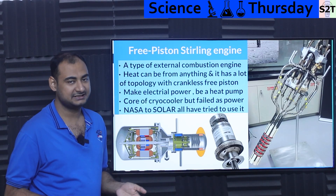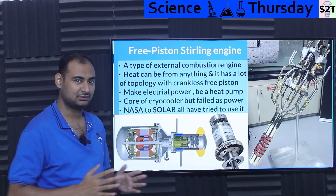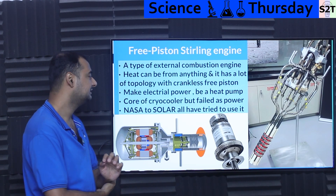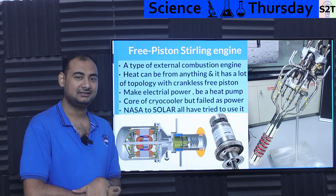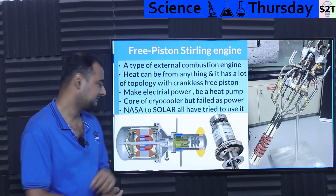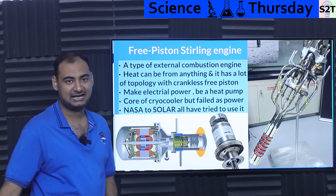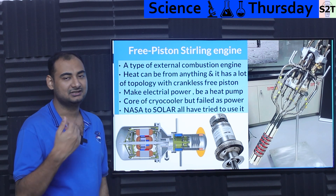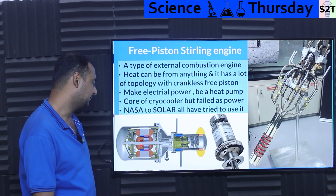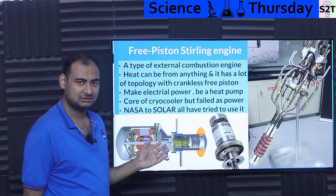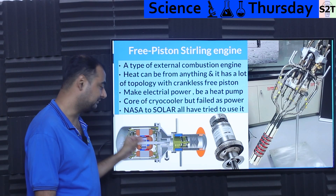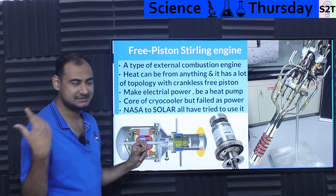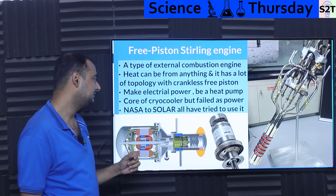There are many crank-based Stirling designs — Philips makes some excellent ones. But somebody asked: what if we throw away the crank and put springs there? The oscillating action still happens, but instead of a crank you have a spring. And if you put magnets in the center and coils around them, you can extract electrical energy directly from that oscillation.